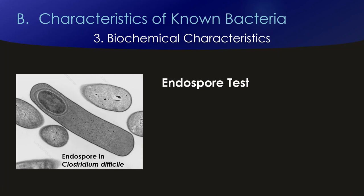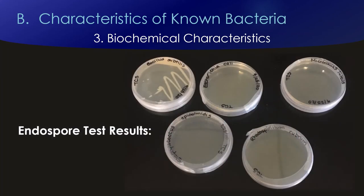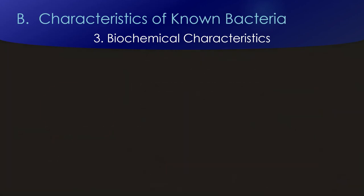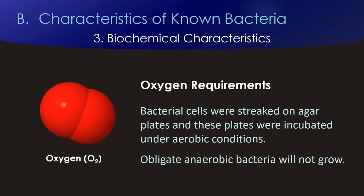The next test is an endospore test. Basically you take your original sample, expose it to heat at 80 degrees Celsius for 10 minutes — this will kill all living cells. Any cells that can form endospores will survive, and when you spread that on a plate you should see growth. Here are the endospore test results: only one organism has grown after the heat treatment — and as I mentioned, we actually saw endospores in the Gram stain of that particular organism. The oxygen test is also very simple: we streak them on agar and grow them in the presence of oxygen. If they grow they are aerobic; if they're anaerobic they will not grow.